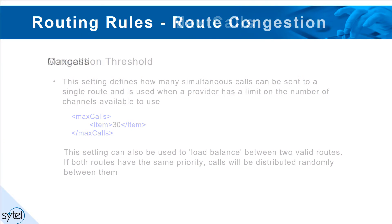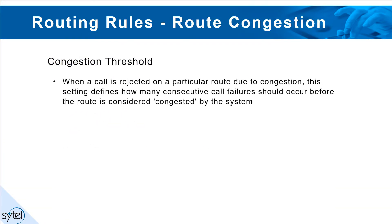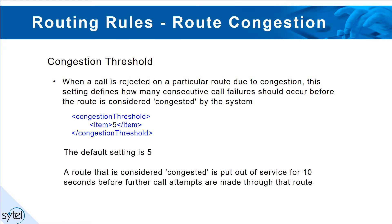Congestion threshold: when a call is rejected on a particular route due to congestion, this setting defines how many consecutive call failures should occur before the route is considered congested by the system. The default setting is 5. A route that is considered congested is put out of service for 10 seconds before further call attempts are made through that route.